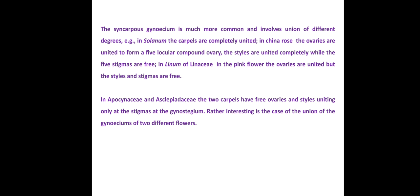In China rose there is a five-locular ovary with styles also united but stigmas free. In Linum the style is united but stigma is free. In Apocynaceae and Asclepiadaceae, the two carpels have free ovaries and the styles unite only at the stigma, forming a gynostegium. A very peculiar characteristic of Apocynaceae and Asclepiadaceae is the union of gynoecium from two different flowers.